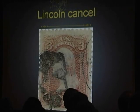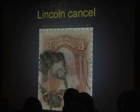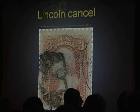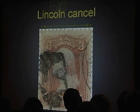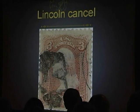The postmaster of Gouverneur, New York, an upstate town, hand carved an image of old Abe on wood to cancel the stamps on his town's mail.